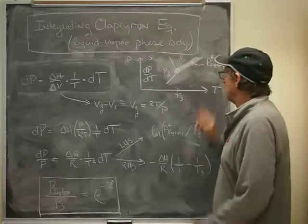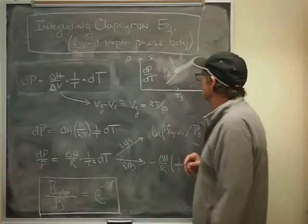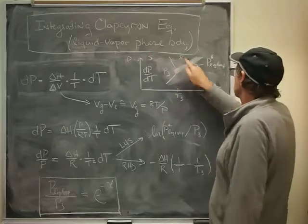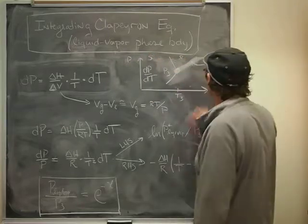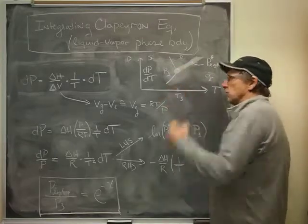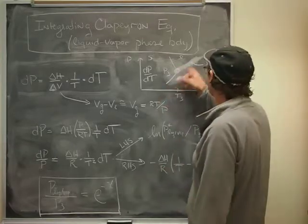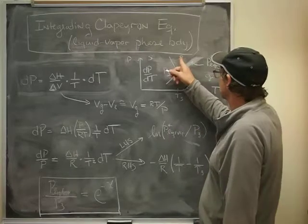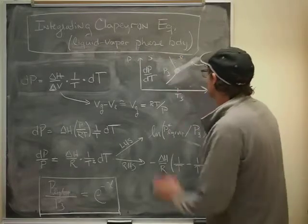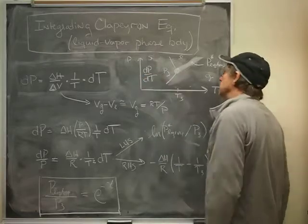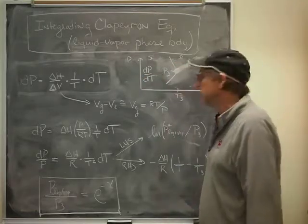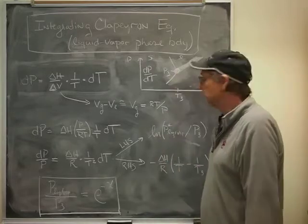So here we have a phase diagram, and the regions of the phase diagram are solid, liquid, and gas over here. These lines are the phase boundary lines of equilibrium, and in this case we're focusing on the liquid-gas equilibrium. Our anchor point in this is the triple point, which has a temperature we're calling T3 and a pressure we're calling P3.